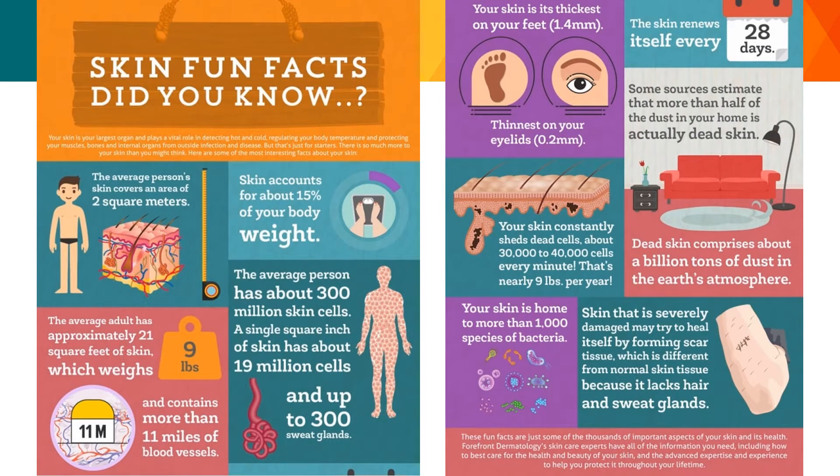There are many interesting facts about your integumentary system. Apart from being the largest organ, the average person's skin covers an area of 2 square meters and accounts for about 15% of your body weight. The average adult has approximately 21 square feet of skin, weighs 9 pounds, and contains more than 11 miles of blood vessels. Your skin is thickest on your feet at 1.4 millimeters and thinnest in your eyelids at about 0.2 millimeters.